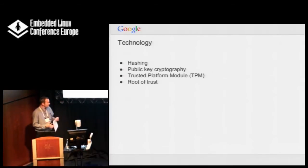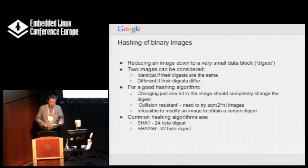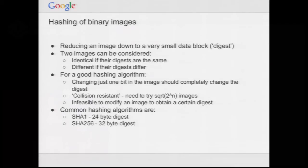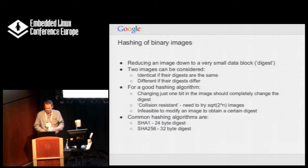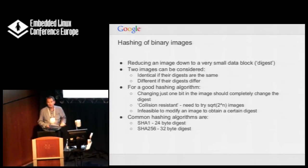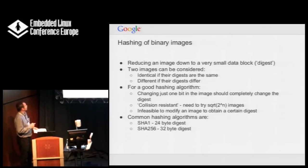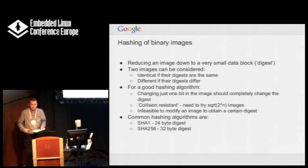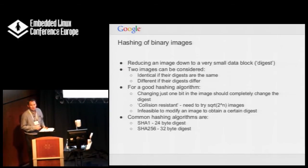Most of you know about hashing. The idea is to reduce the image down to a very small size, maybe 32 bytes. It has to be secure. The key thing about the hashing algorithm is that changing one bit in the image should completely change the digest. And it can't be possible to modify an image to obtain a certain digest — because if somebody can change the software and make it have the same hash as the software you sent out, then your protection is gone. That's why hashing algorithms are quite complicated to devise, and why most people use well-known ones.